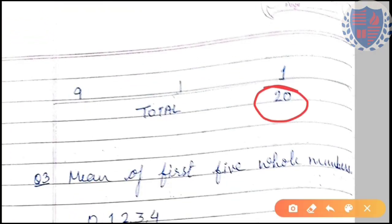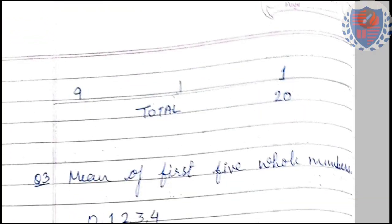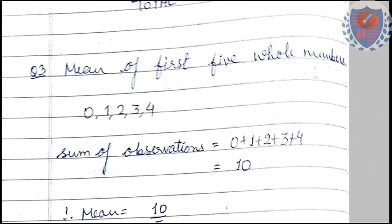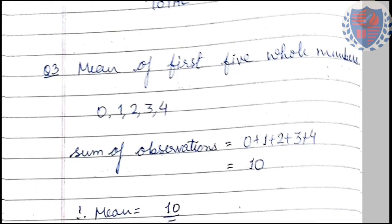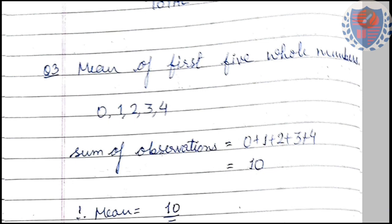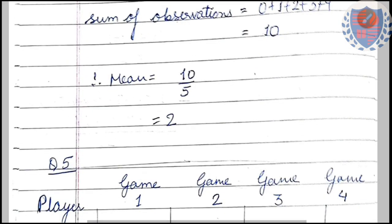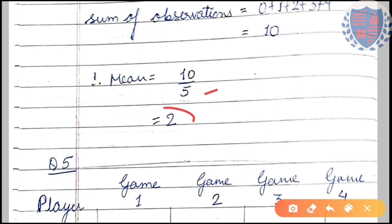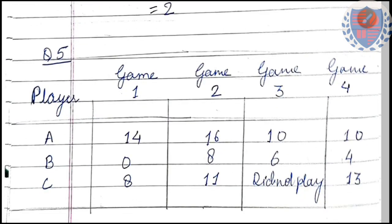Next is the mean of the first five whole numbers. Whole numbers start from zero, so we add 0 + 1 + 2 + 3 + 4, giving a sum of 10. There are five numbers, so the mean is 10 divided by 5 = 2.